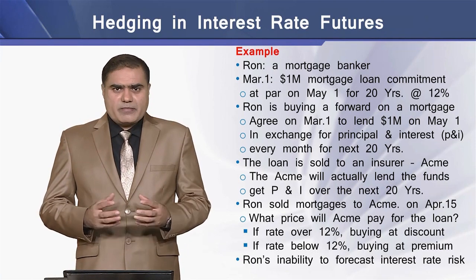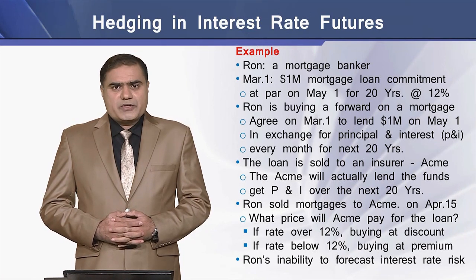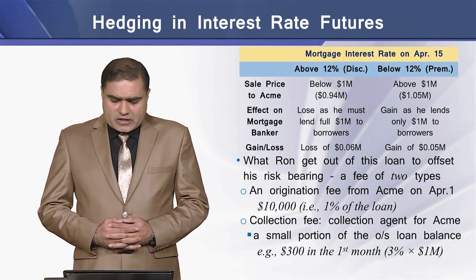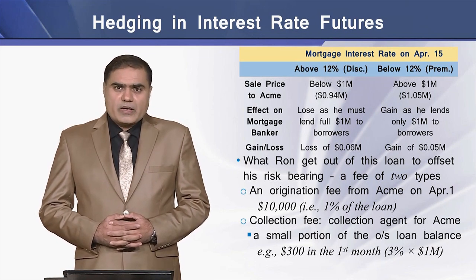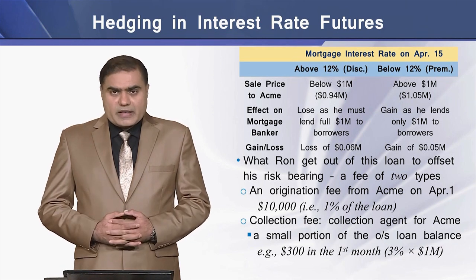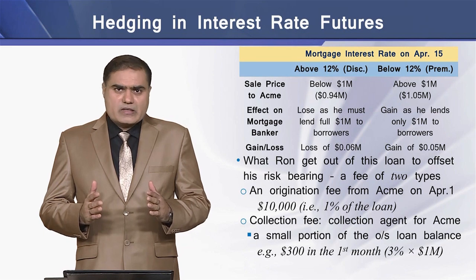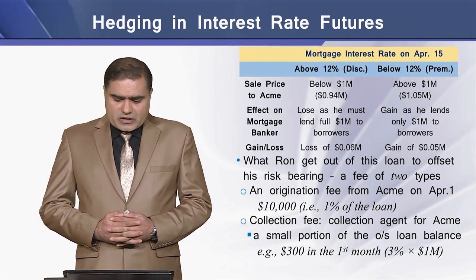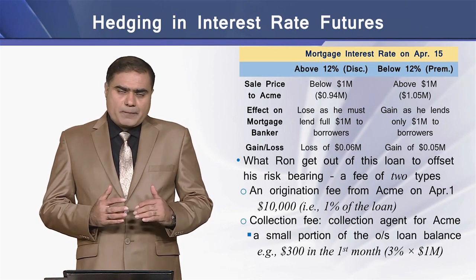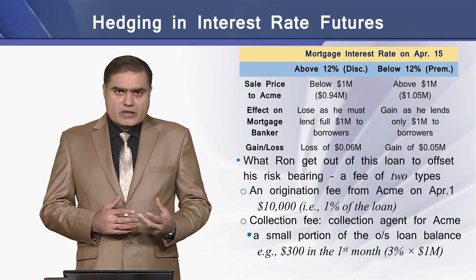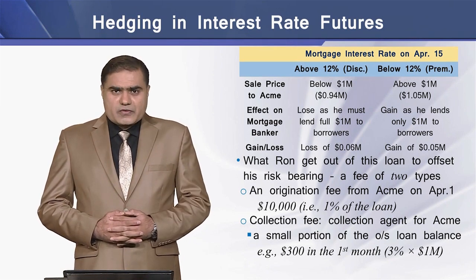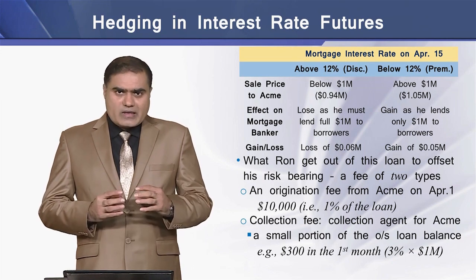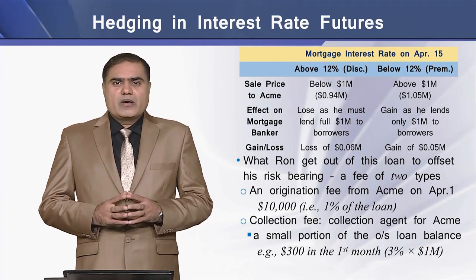We assume there is an inability of Ron to forecast interest rate movements in the days to come. On April 15, if the interest rate is above 12%, the mortgage loan payment by Aceman will be below $1 million. If the interest rate is below 12%, Aceman will be paying over $1 million. So the sale price will be below $1 million if the interest rate is above 12%, and greater than $1 million if the interest rate is below 12%.